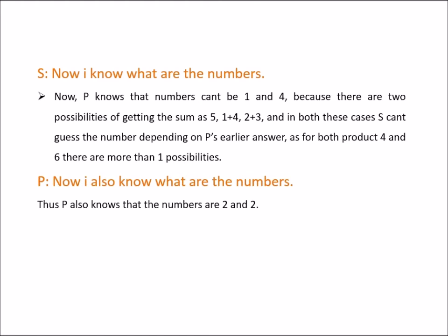And in both these cases, S can't guess the number depending on P's earlier answer. As for both product 4 and 6, there are more than one possibilities. So P confirms that the numbers are 2 and 2 and says that now I also know what are the numbers.